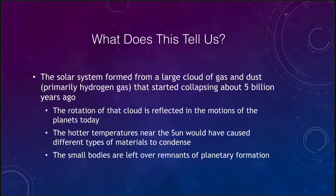We believe that the solar system formed from a large cloud of gas and dust that was primarily hydrogen and started collapsing about 5 billion years ago. Looking at some of the evidence, the rotation of that cloud is reflected in the motions of the planets today. The fact that everything orbits counterclockwise now means that the giant gas cloud was once spinning counterclockwise — much, much slower — but it had that very slight motion that got magnified as it began to collapse.